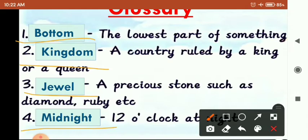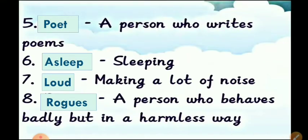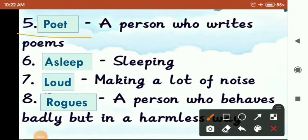Fourth is 'Midnight'. Midnight क्या होता है? Twelve o'clock at night. रात में बारह बजे के समय को हम कहते हैं Midnight. Fifth is 'Poet'. Poet means a person who writes poems. कोई भी व्यक्ति जो poems write करता है, उसे कहते हैं Poet.